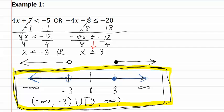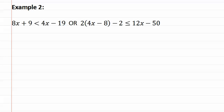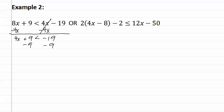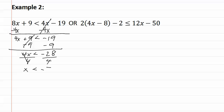Let's look at example two. Let's solve each piece one at a time. In the first inequality, let's move the x's to one side. This gives us 4x plus nine is less than negative nineteen. Then moving the nine over gives us 4x is less than negative twenty-eight. We then divide both sides by four, giving us x is less than negative seven.